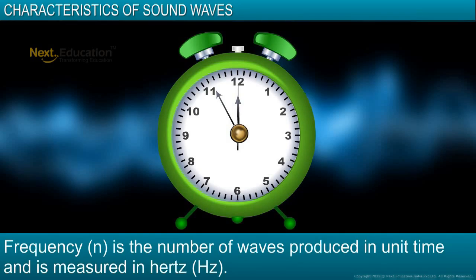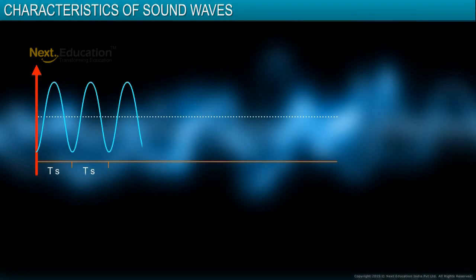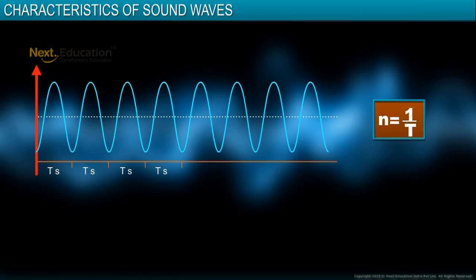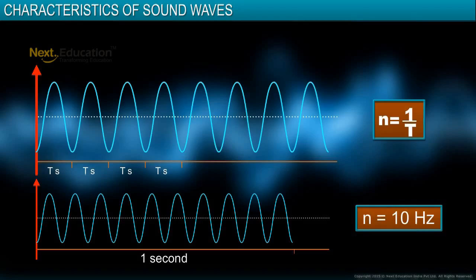Frequency of sound is the number of waves produced in unit time. It is denoted by the letter N and is measured in hertz. The relationship between frequency and time period can be expressed as N equals 1 divided by T, where T is the time period. Thus, if the time period of a wave is one-tenth of a second, then we get 10 waves in one second. The frequency of this wave is 10 hertz.